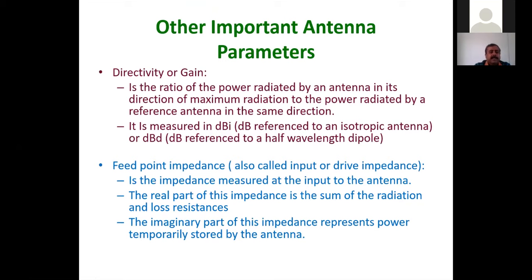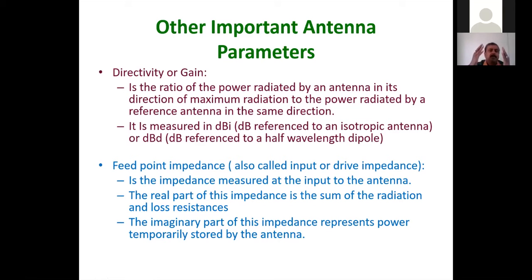Directivity and gain is the ratio of power radiated by an antenna in its direction of maximum radiation to the power radiated by a reference antenna in the same direction. It is measured in dBi or dBd. If you imagine squeezing a spherical balloon from one side, it extends forward—how much extension occurs compared to its average is essentially the directivity. Directivity is referenced to an isotropic source (dBi) or a dipole (dBd).